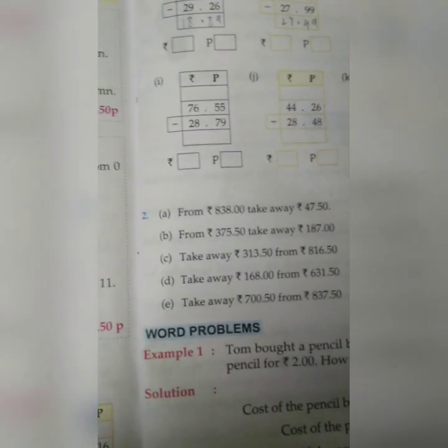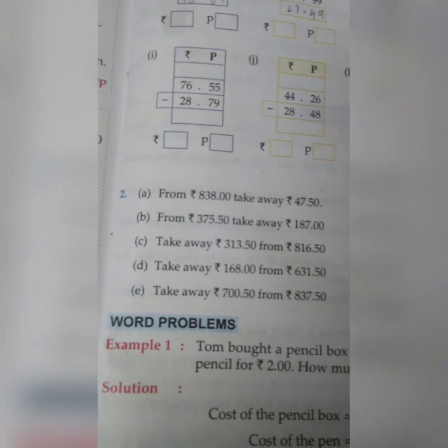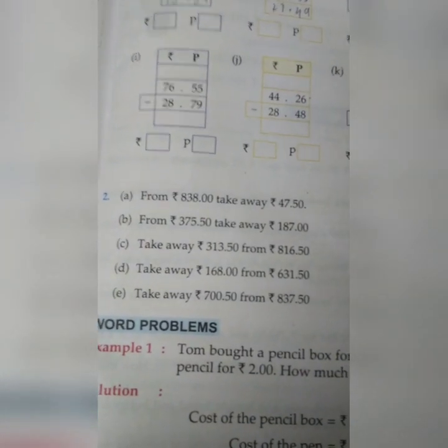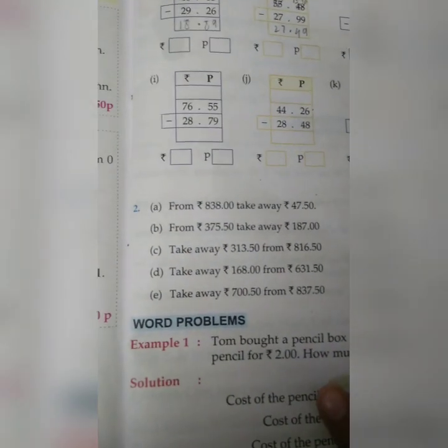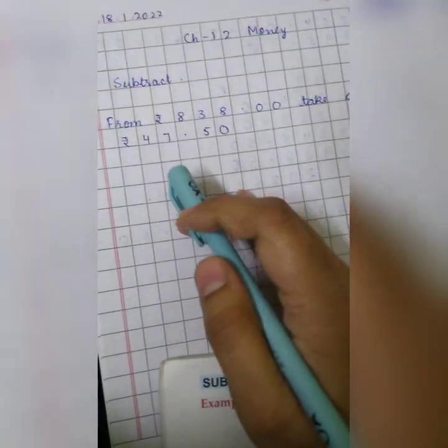So let us copy down question number 2 and learn how to do the subtraction and then question number 1 will be so easy for you. The question number 2 part A you have to copy it down in your notebook. So what we have to do?